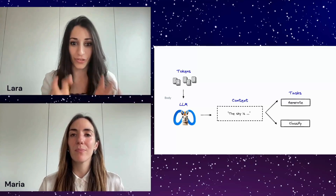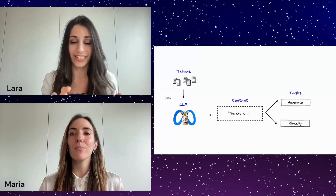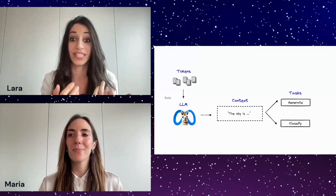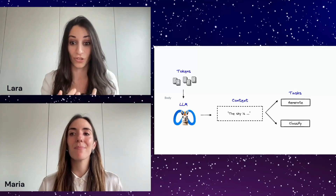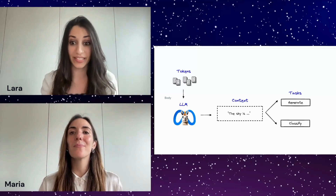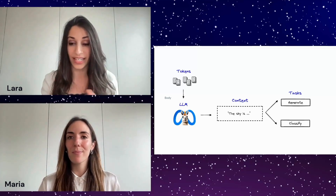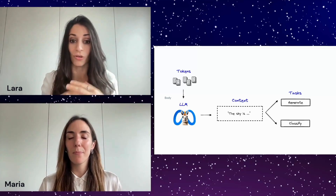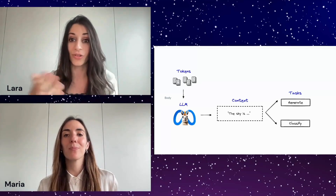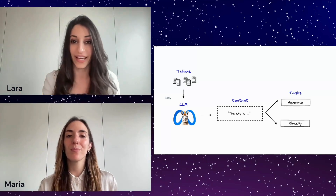For example, as you can see here in this diagram, the LLM is going to take in some tokens and then, based on the context — meaning all the other words — it's going to perform a task.